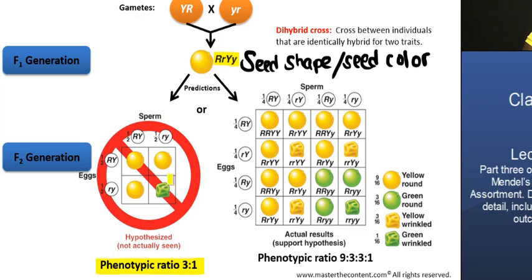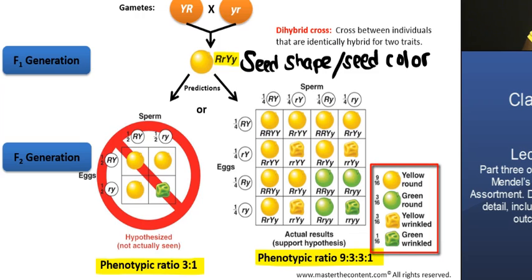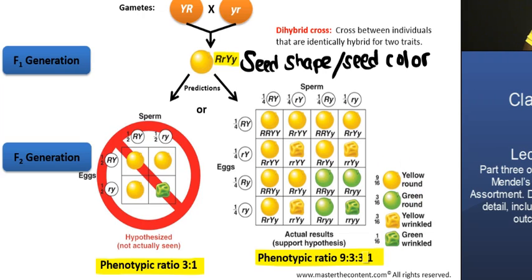But what actually happened is that when Mendel performed this cross and selfed or crossed the F1 generation, what he observed was quite the opposite. In the second filial generation, the F2 generation, he observed a phenotypic ratio of 9 to 3 to 3 to 1 — 9 plants with yellow round seeds, 3 with green round seeds, 3 with yellow wrinkled seeds, and 1 with green wrinkled seeds. This is a ratio in which he observed those four different phenotypes.